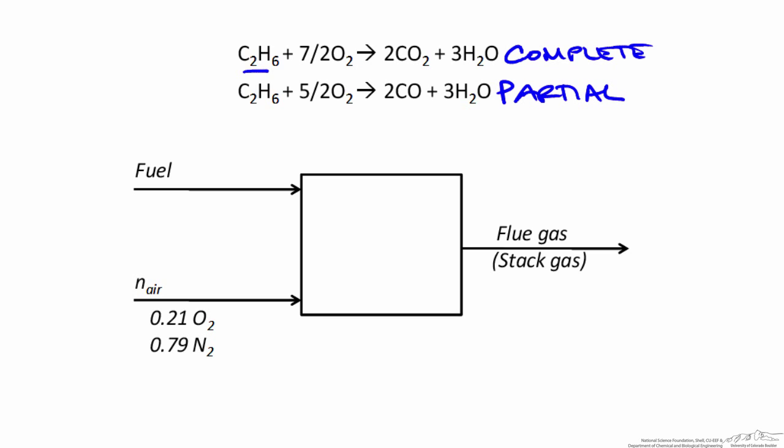In most applications the oxygen source for combustion is air, which is 21% oxygen by mole and 79% nitrogen. Air is generally fed to the reaction in excess for several reasons. The reason for combustion is not to generate products of interest, but to harness the energy Q that is released in these exothermic reactions for some other purpose.